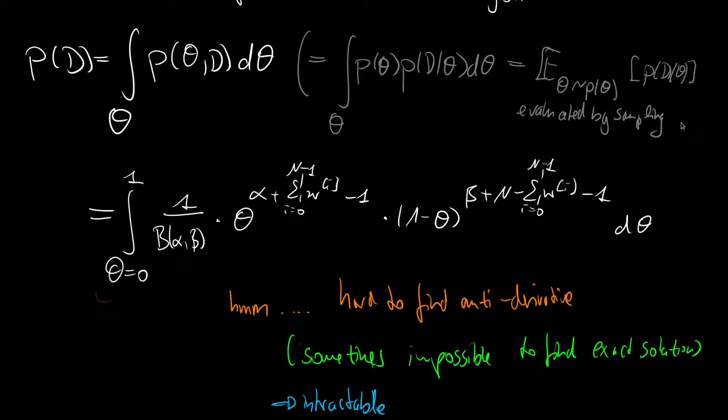And this can be evaluated by sampling. And if you've seen the video on the predictive posterior, we've also come across an operation where you would do something like this, but you would then sample or find the expectation over the posterior. And here we would do the expectation over the prior.